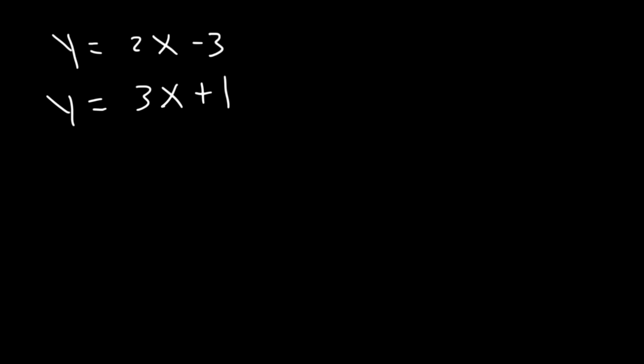So first, notice that the slope is not the same. So it's not going to be parallel to each other. Now if we take the first slope, which is 2 or 2 over 1, and if we find a slope that's perpendicular to it, which is going to be negative 1 over 2, don't forget to change the sign and flip the fraction. Notice that this slope is not the same as 3. Therefore, these lines are not perpendicular, which means that it's neither. They're not parallel, and they're not perpendicular.